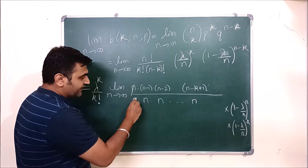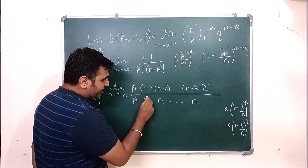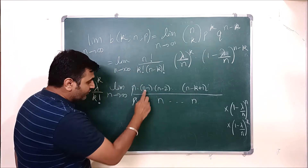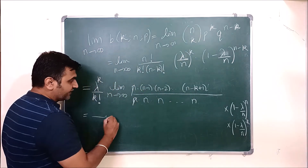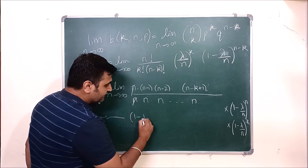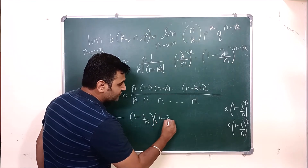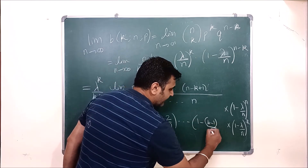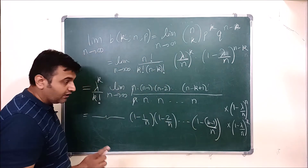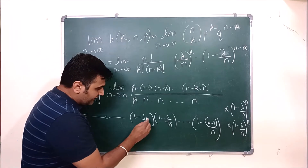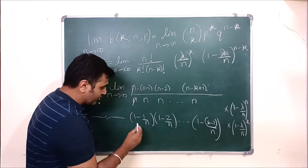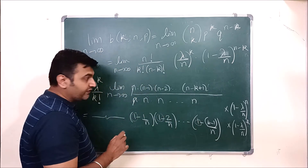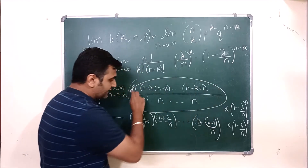We pair each n in the denominator with the corresponding factor in the numerator. This gives us 1 times (1 minus 1/n) times (1 minus 2/n) times (1 minus 3/n), continuing up to (1 minus (k minus 1)/n). Now as n goes to infinity, each of these terms goes to 0 in the subtraction, so each factor approaches 1. Therefore, as n goes to infinity, this entire product is equal to 1.